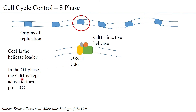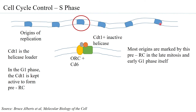This pre-replication complex formation happens in the G1 phase. In the early G1 phase all CDT1 is kept active, because only then can it load the inactive helicase onto the origins. Most origins are marked by this pre-replication complex, and this earmarking actually begins in late mitosis and early G1 phase.